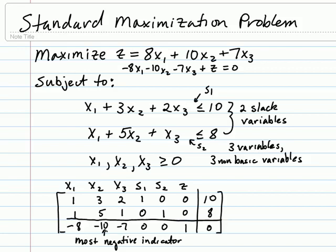Therefore, we know that we will be pivoting in the second column. To find out whether we pivot on the 3 or the 5, we must come up with the corresponding ratios by taking the constant and dividing it by the entry in the pivot column. So our first ratio is 10 over 3, which is 3 and a third.